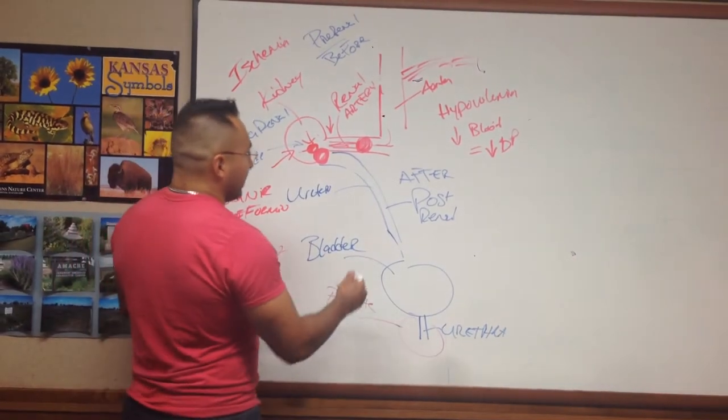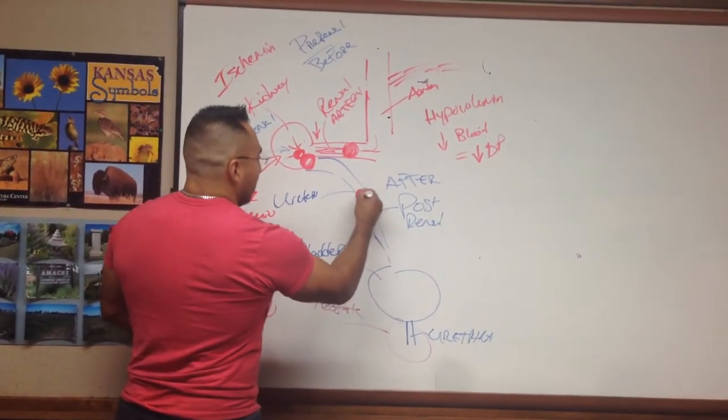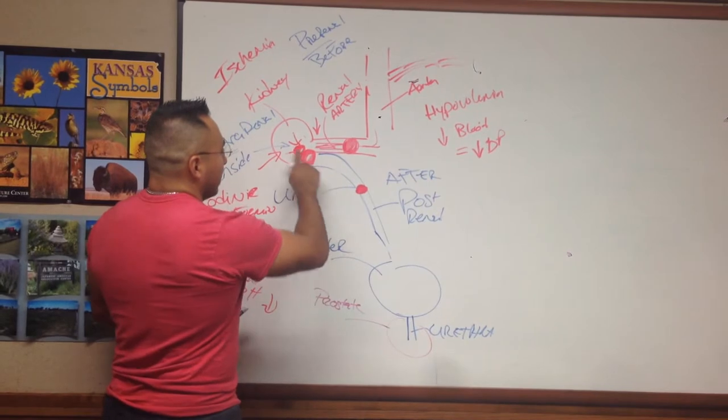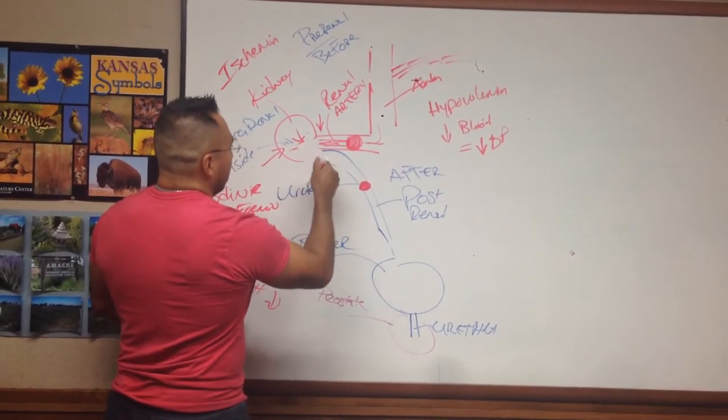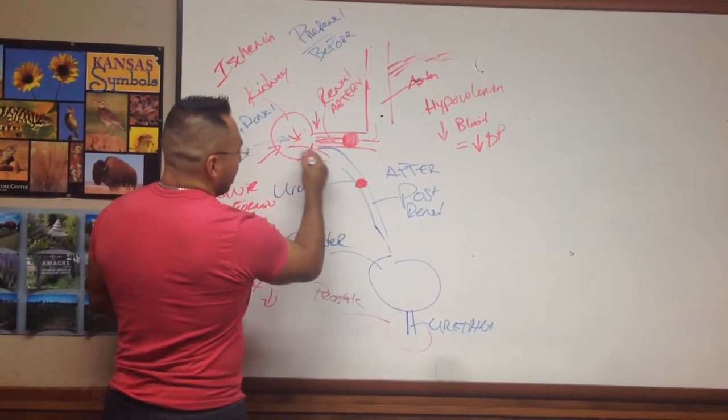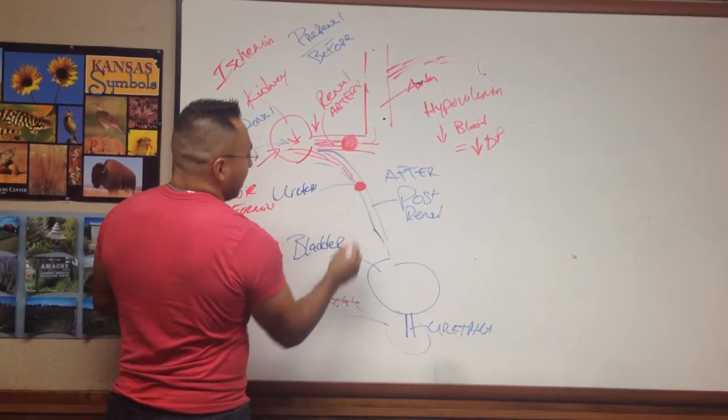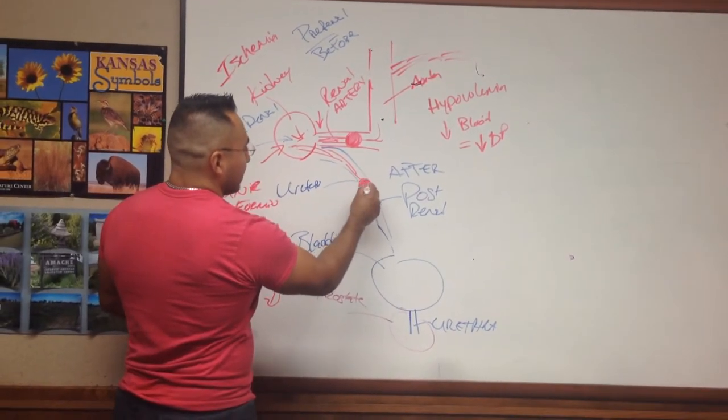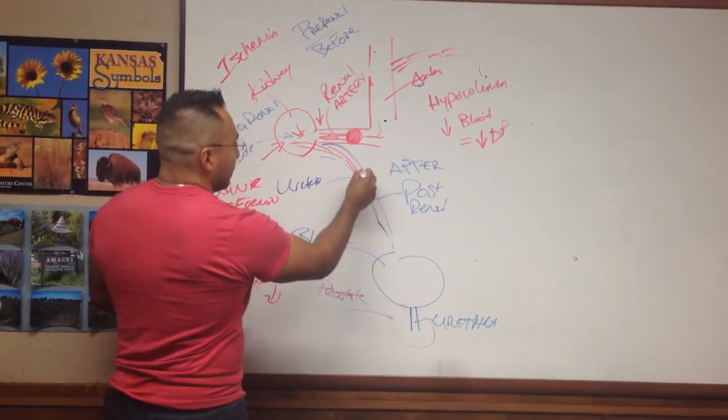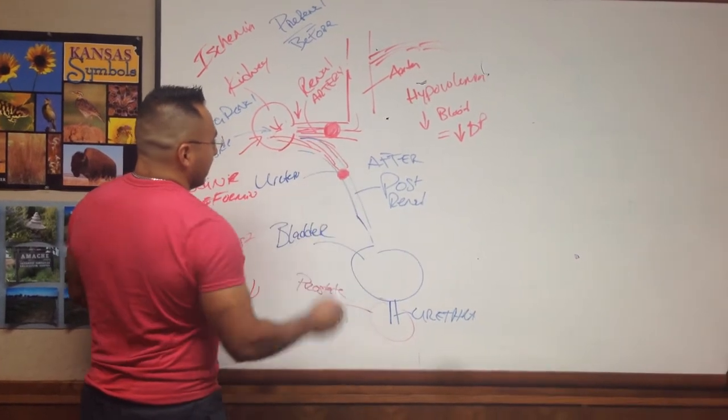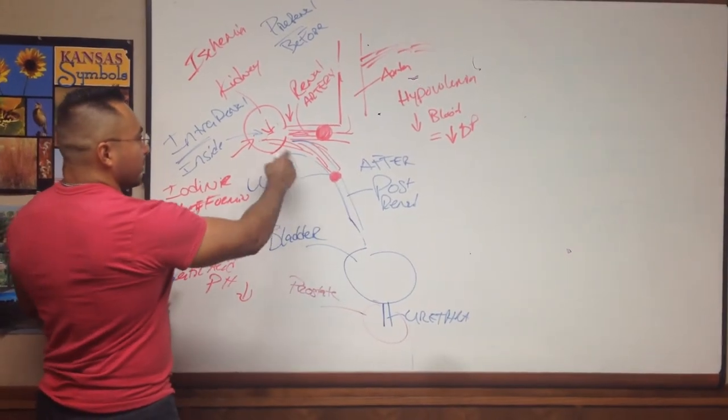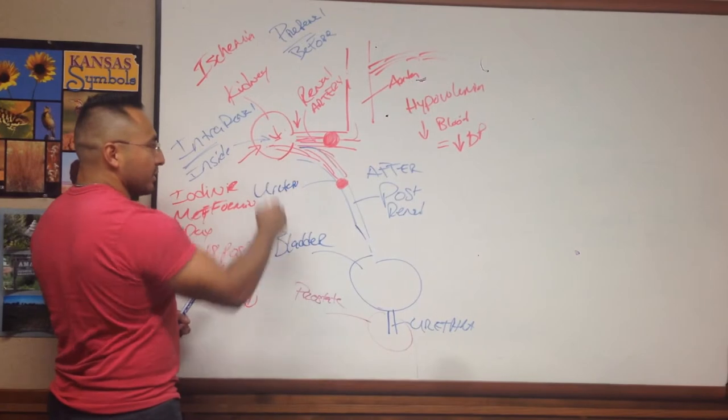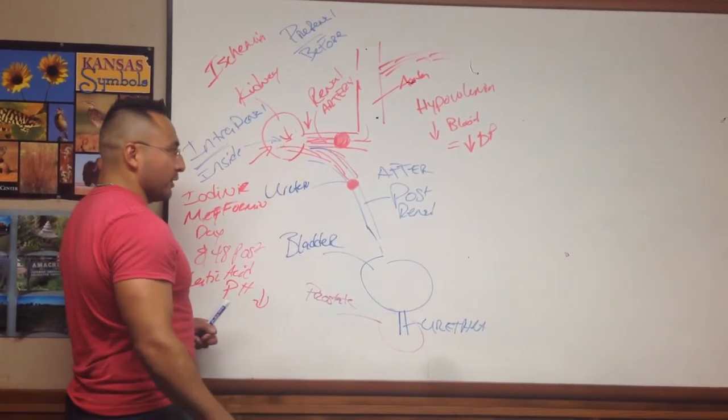Postrenal failure would be if you have like a kidney stone here. Again, the urine can come through here, and then it gets blocked off because of the stone causing an occlusion. So this urine backs up. And just like here, all this urine accumulating in here causes an infection, which can destroy your kidney.